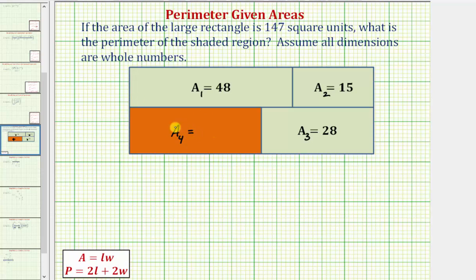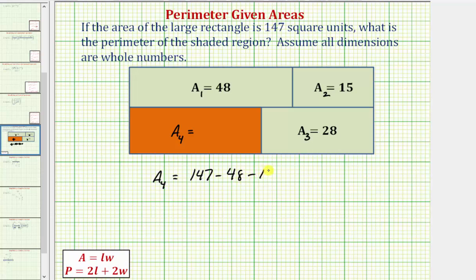Let's begin by determining the area of this orange rectangle. The area of a sub four equals the total area of the large rectangle, which we know is 147, minus the three known areas of 48, 15, and 28. So: 147 minus 48 minus 15 minus 28 equals 56. Therefore a sub four must equal 56 square units.